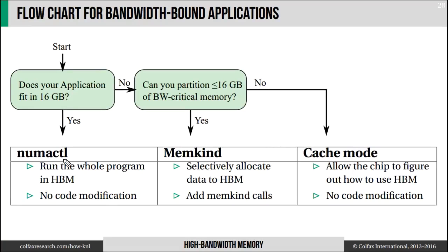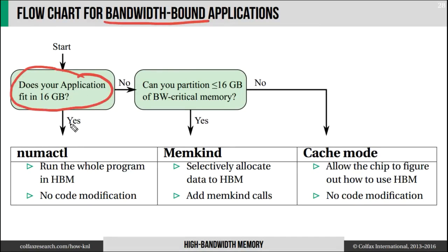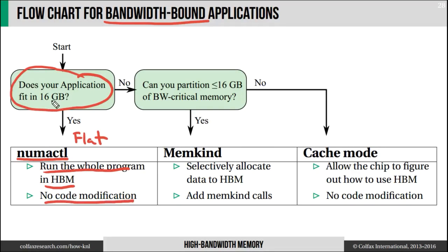We have a flowchart to help you decide whether to use flat or cache memory mode. This is only applicable to bandwidth-bound or bandwidth-sensitive applications. If your application requires less than 16 gigabytes of memory, then you have a very interesting approach: run the entire program in high bandwidth memory. For that you will use the flat memory mode and a tool called numactl, which I will illustrate in a few minutes. No code modification is required in this approach, but you have to be able to fit your application under 16 gigabytes.